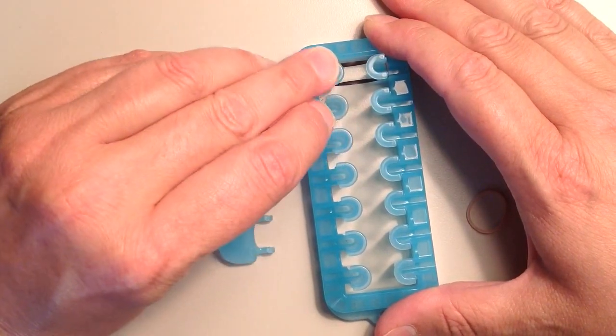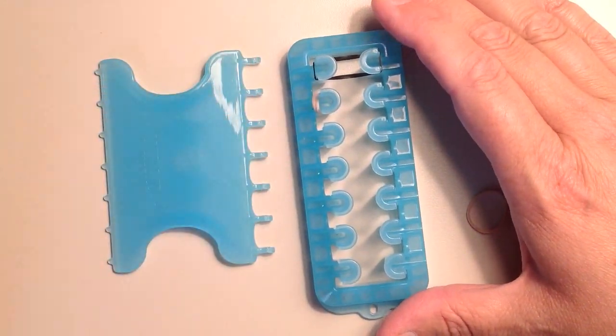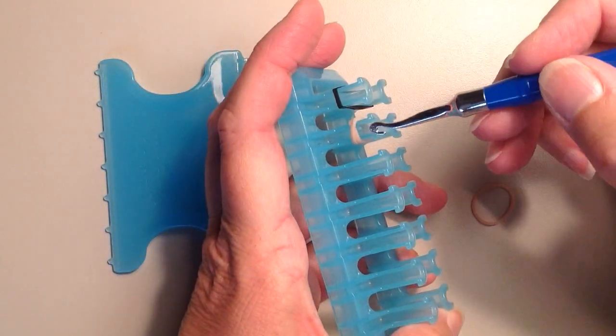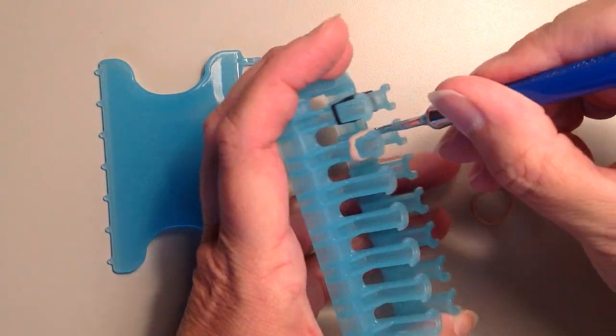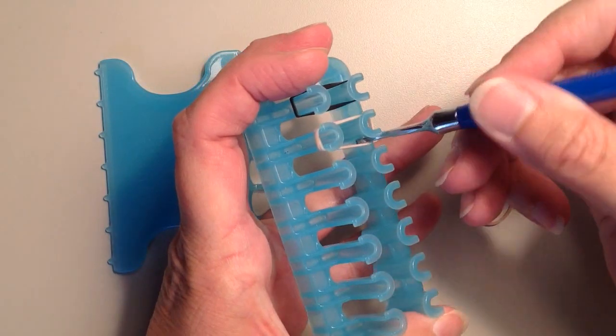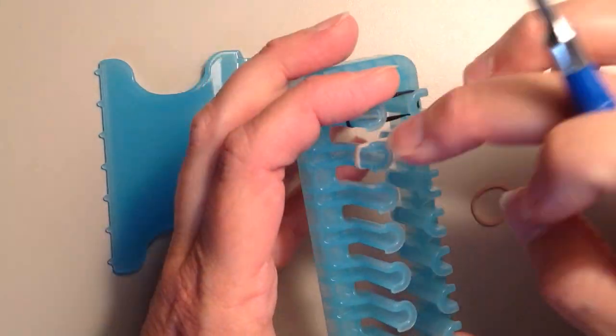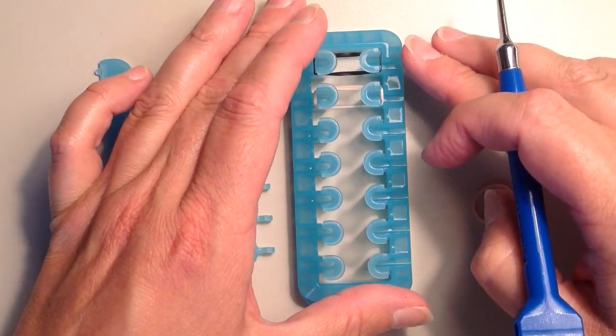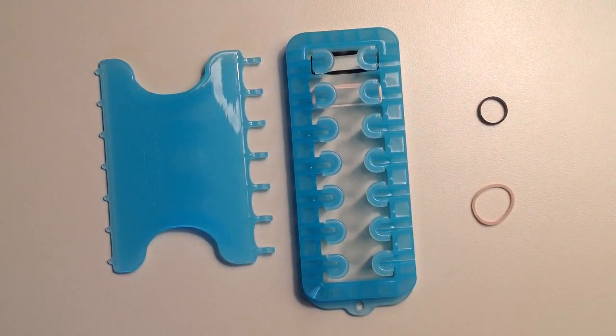And then what you just need to do is take your hook and grab both of those loops and stretch it straight across. So basically now you've just doubled that, so it's going to be about the same width as your regular Alpha Loom band.